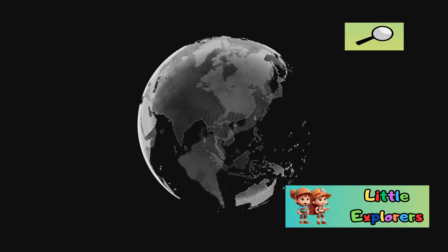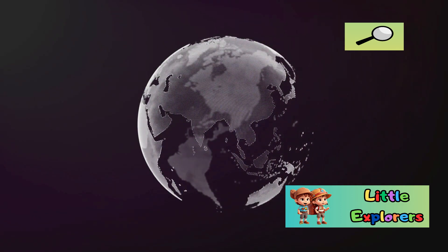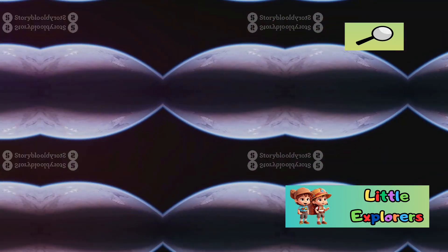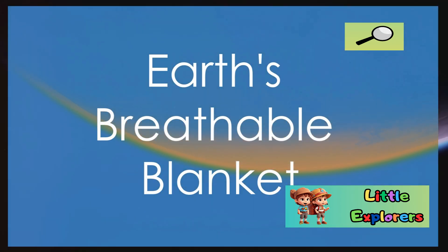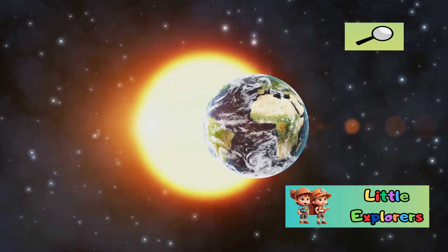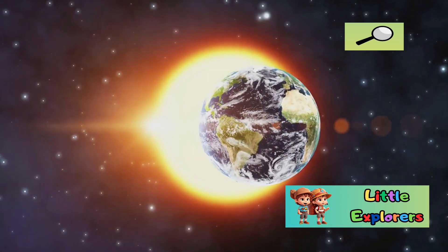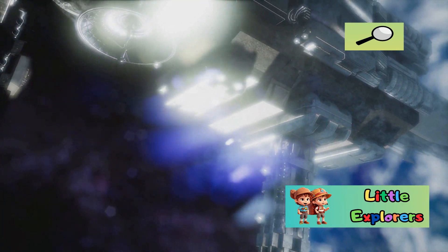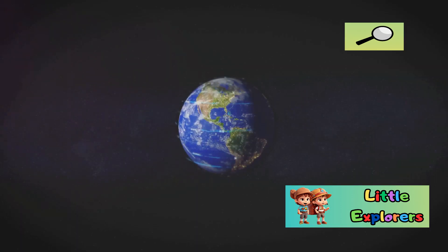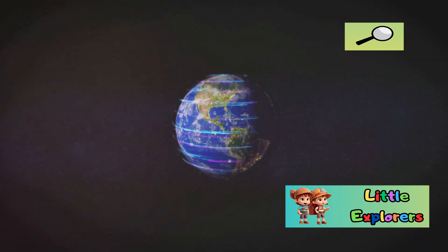As we delve deeper into the characteristics of our planet, we'll uncover the delicate balance of factors that make Earth a haven for life. One of Earth's most crucial features is its atmosphere. This invisible layer of gases surrounds our planet, providing the air we breathe and shielding us from harmful radiation from the sun. Our atmosphere is a delicate mix of nitrogen, oxygen and other gases, perfectly balanced to support life. Other planets have atmospheres, but none quite like ours.